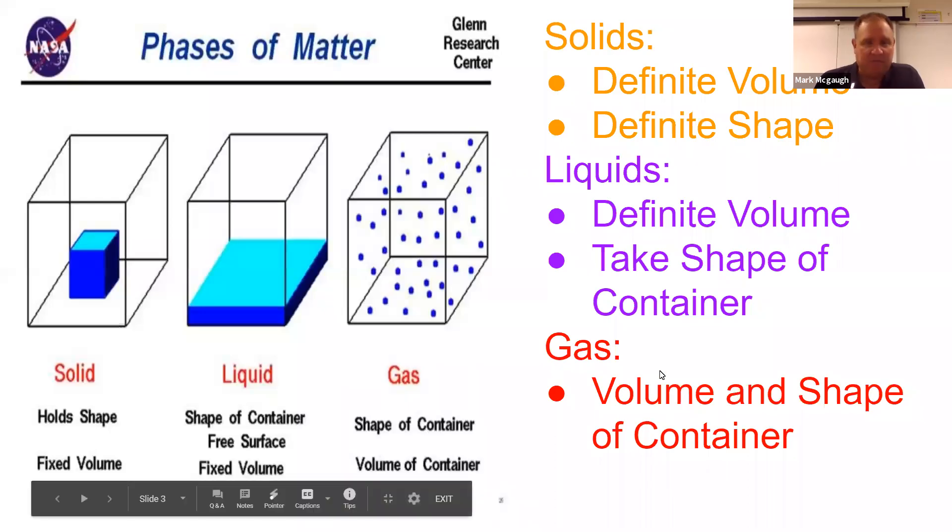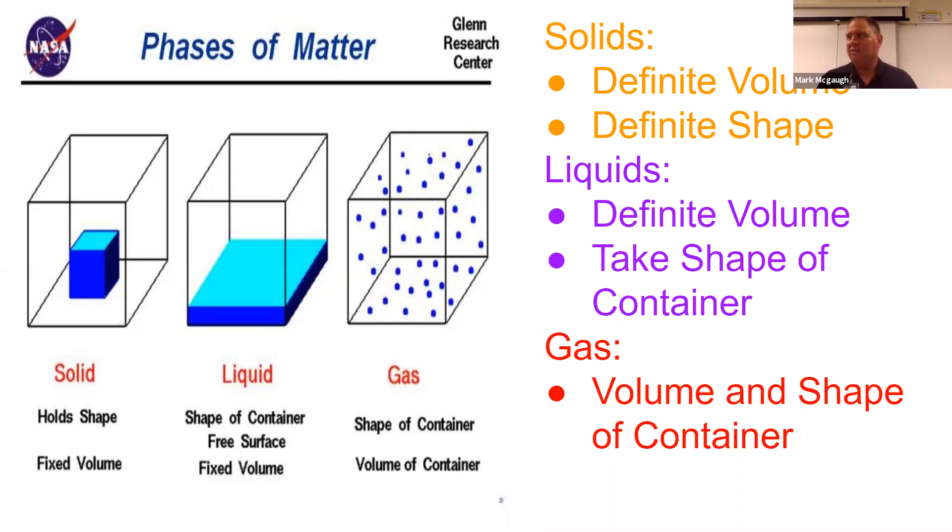Gas takes the volume and the shape of its container. Air blows in and out of rooms. We don't have much control over the shape of gases.